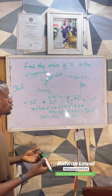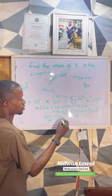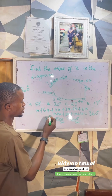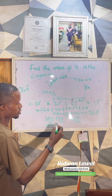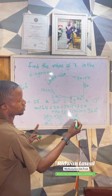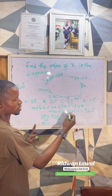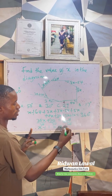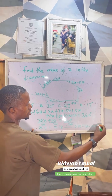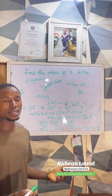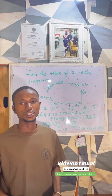Dividing through by 20, since 20 is common, we cancel the 20s. We get x plus 1 equals 18, so moving the 1 to the other side gives us x equals 17. So the value of x is 17 degrees, and the correct option is option D.